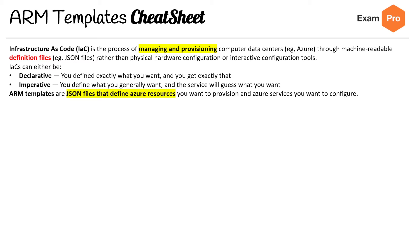For ARM templates, they are JSON files, as suggested above, that are used to provision Azure services you want to configure. They are declarative, so you get exactly what you define.